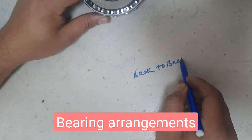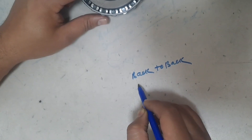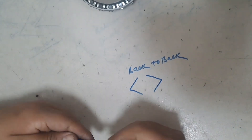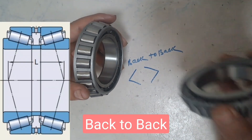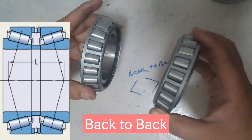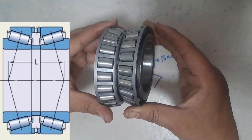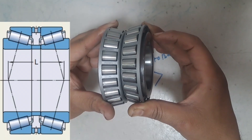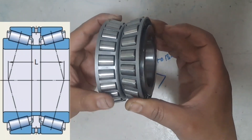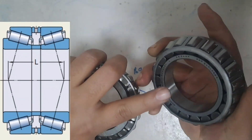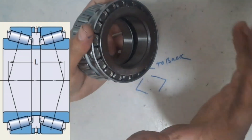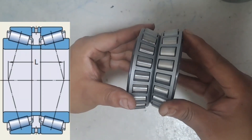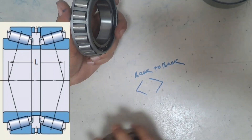There are two bearing arrangements: back-to-back and face-to-face, used in taper roller bearings as well as angular contact bearings. In the back-to-back arrangement, the back of one bearing meets the back of another bearing. You can see that both bearing backs are matching with each other — that is why it is called a back-to-back bearing.